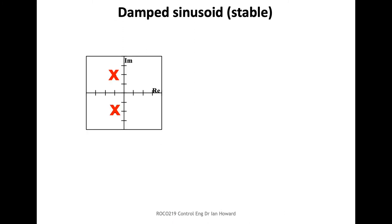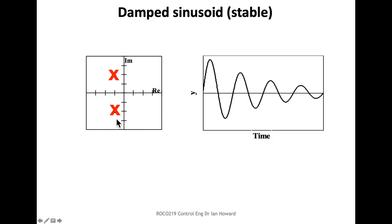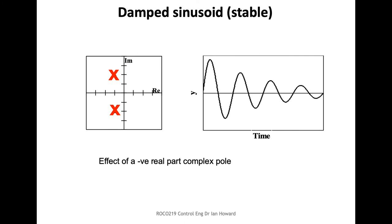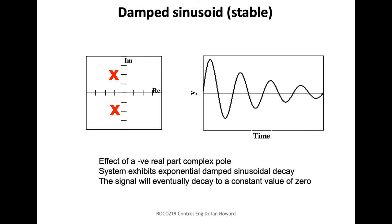If we have an imaginary component on our pole — even with a negative real part — so we have a complex pole with negative real part and imaginary components, that means it corresponds to some kind of oscillation. If there's a negative real part, this will be an exponentially decaying oscillation. Because it's decaying, it'll end up going to zero, and therefore the system is going to be stable.